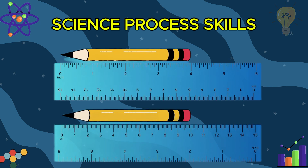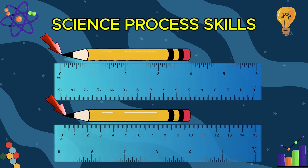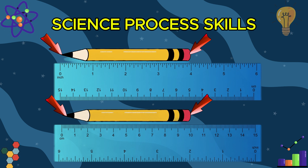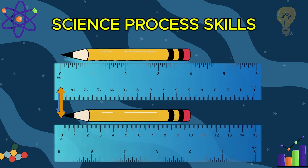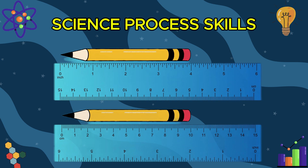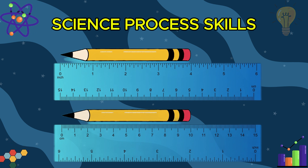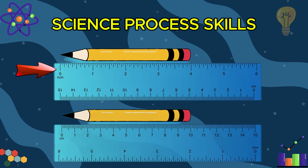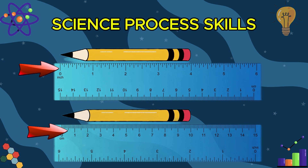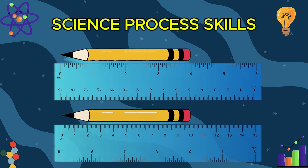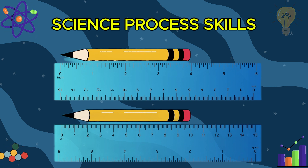Let me show you how to measure the length using a ruler. First, identify the correct starting and ending points on the object. Next, ensure the object is aligned with the zero mark on the ruler, making sure it's straight and lined up properly. To measure the length, find the point closest to the end of the object, and round up or down to the nearest inch or centimeter if needed. Finally, record the length either in inches, centimeters, or fractions of an inch or centimeter.